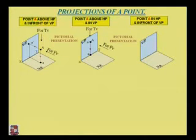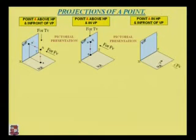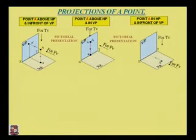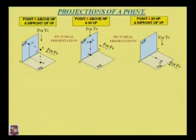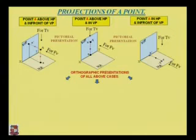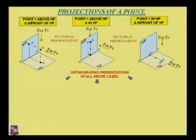In the third case, point A is in the horizontal plane and in front of the vertical plane. When the point A is in the horizontal plane and in front of the vertical plane, the projection of the front view will be on the XY line, and the projection of the top view will be on the horizontal plane, denoted as A-dash and A.